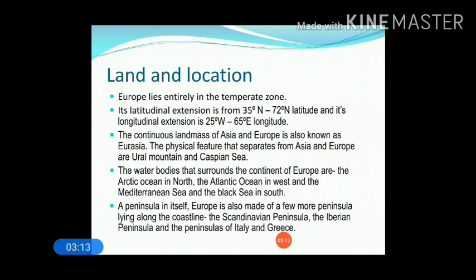The latitudinal extension of Europe is 35 degrees north to 72 degrees north, and its longitudinal extension is 25 degrees west to 65 degrees east. The latitudinal extension shows that this continent lies in the temperate zone. The east-west extension shows Europe extends in both western and eastern sides — up to 25 degrees west and 65 degrees east, so the maximum extension of Europe is in the eastern side.